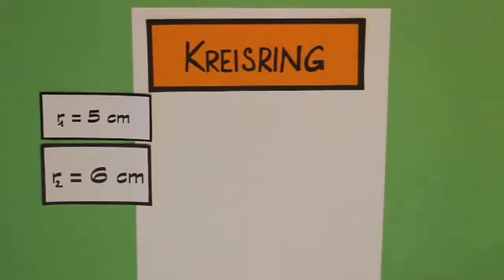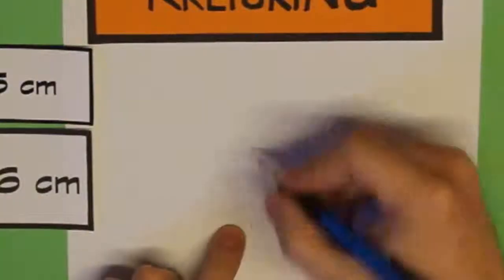Da die Kreise konzentrisch sind, wie wir schon gesagt haben, haben sie den gleichen Mittelpunkt. Also markieren wir diesen Mittelpunkt auch gleich einmal.